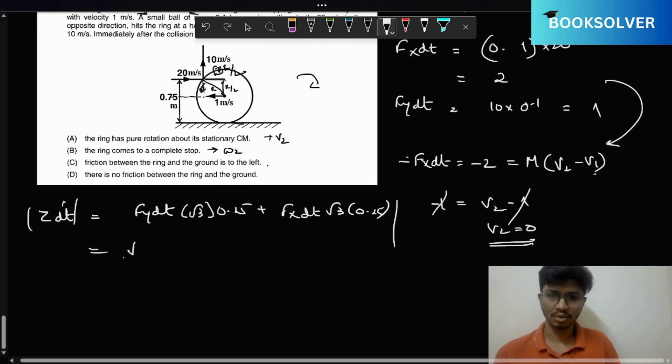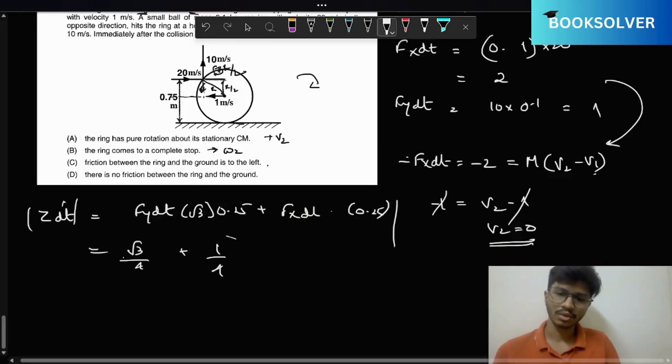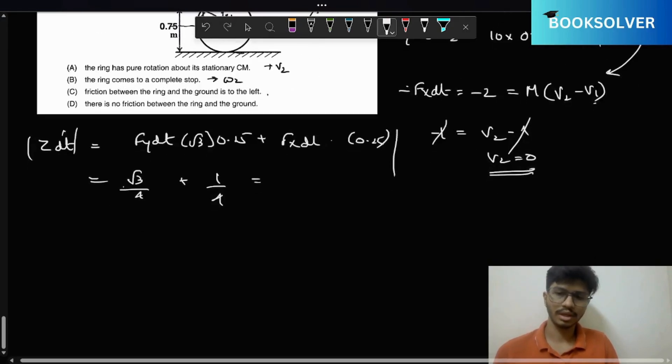It will be basically 1 by 4. So what is 1.73, 2 minus 4 by 4? That would be 0.43 plus 0.25, so this is basically 0.683.